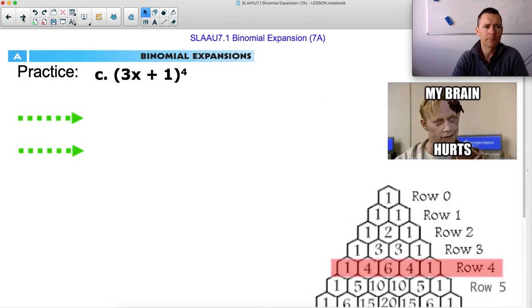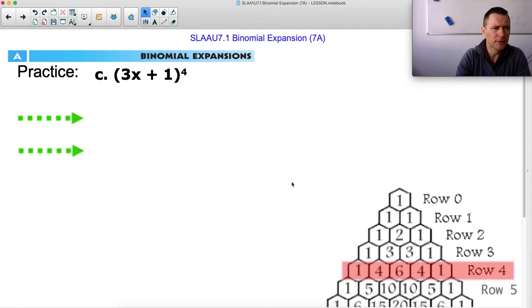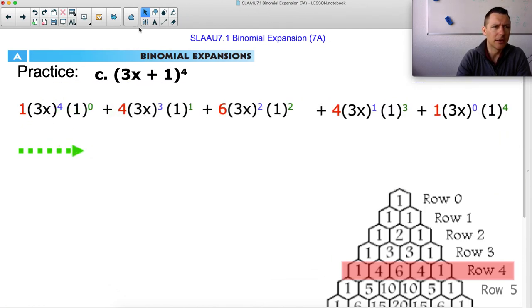Great. Okay, so you try it. Yeah, pause me, try it on your own. It's not just x to the fourth. It's three x to the fourth. Try that out. Great. So we're going to do this same thing. I won't write it out just for time's sake. But here's the 3x starting with four, then three, then two, then one, then none. And the one is going from zero up to three to four.